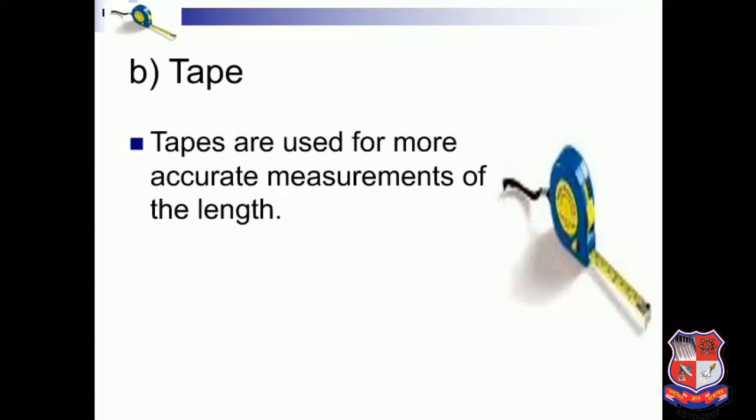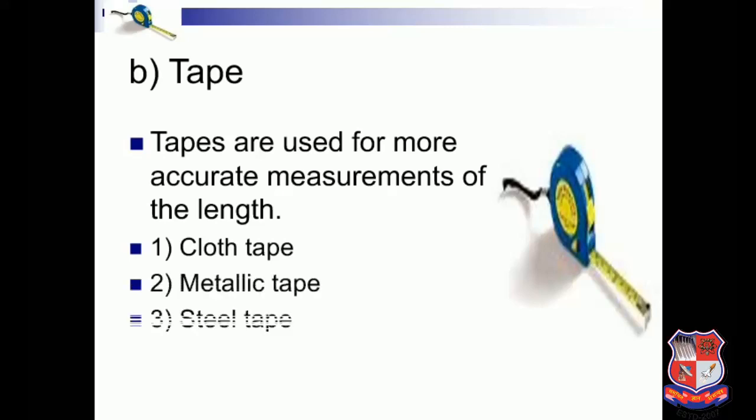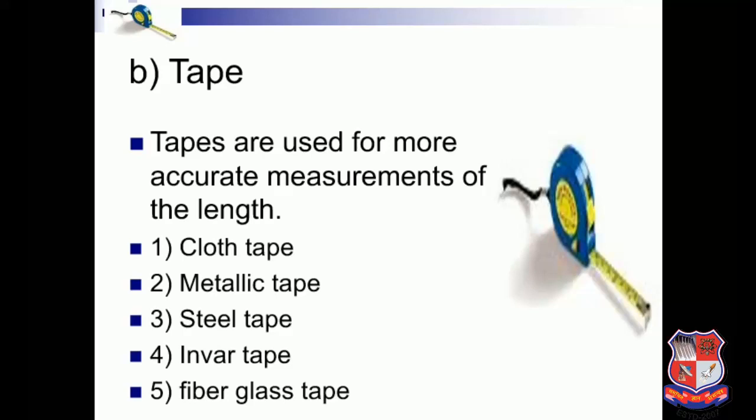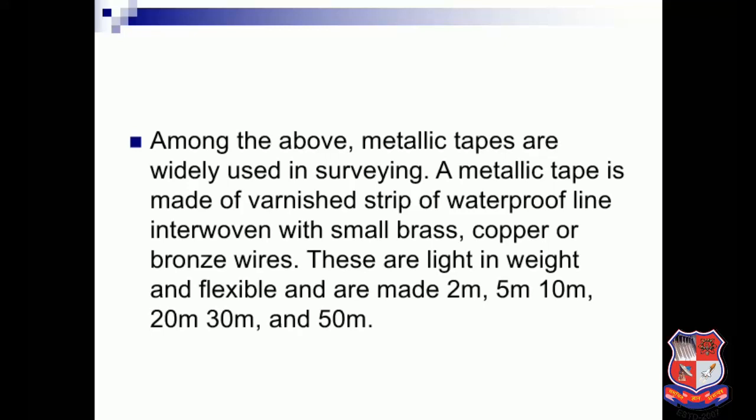Tapes are used for more accurate measurement of length. There are various types: cloth tape, metallic tape, steel tape, invar tape, and fiberglass tape. Among these, metallic tapes are widely used. A metallic tape is made of one strip of waterproof linen interwoven with small brass, copper, or bronze wire. These are light in weight and flexible, and are made in lengths of 2 m, 5 m, 10 m, 20 m, 30 m, and 50 m.